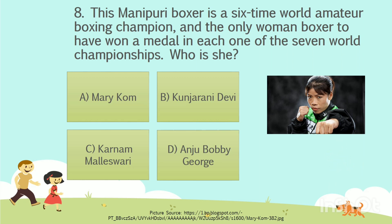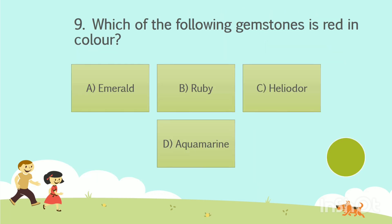The answer is Option A: Merikom. Question number 9. Which of the following gemstones is red in color? Option A: Emerald. Option B: Ruby. Option C: Heliodar. Option D: Aquamarine. Your time starts now.